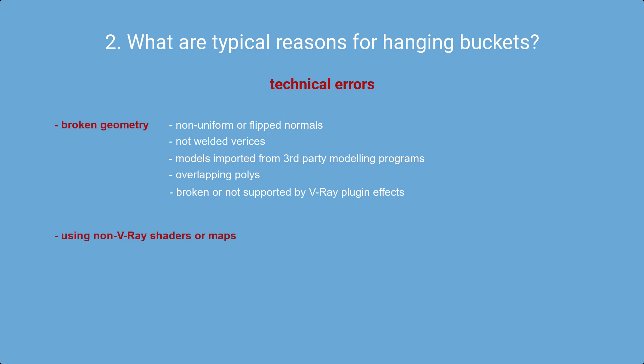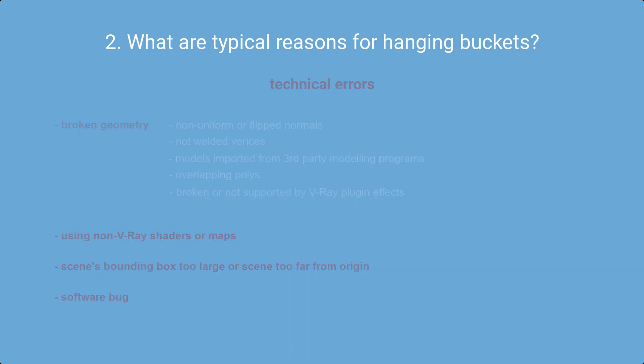Technical issues can also be caused by using shaders or maps from render engines not supported by V-Ray. This often happens with models downloaded from unprofessional asset repositories — for example, a Redshift map nested deep in a shader structure. Other causes include the scene's bounding box being too large, the scene being too far from the coordinate system center, or a software bug in V-Ray, 3ds Max, or a plugin.